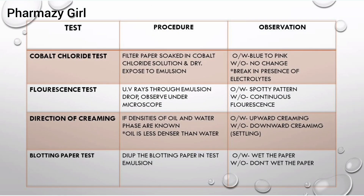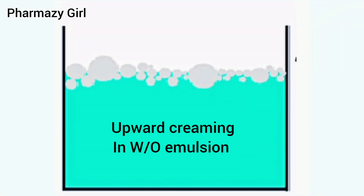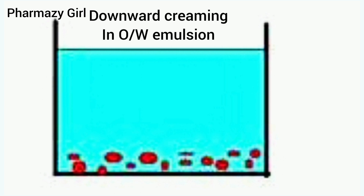The sixth test is the direction of creaming. This test is used when the densities of the oil and water phases are known, and it is based on the fact that oil is less dense than water. If the emulsion is water in oil, then upward creaming will be observed as shown in the picture. And if the emulsion is oil in water, then the creaming will be downward as shown in the picture.